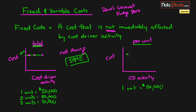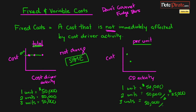If we have two units, the fifty thousand dollars is spread over two units, so the fixed cost per unit drops to twenty-five thousand dollars. If we have three units, fifty thousand spread over three units gives us about sixteen thousand six hundred and sixty-seven dollars per unit, so it forms a curved decline. As you can see, per unit costs actually change for fixed costs. To summarize: total fixed costs stay the same, while per unit fixed costs change.